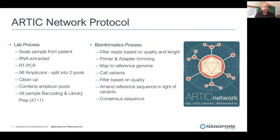The ARCTIC Network Protocol has been developed as an amplicon tiling approach to get a good consensus sequence from SARS-CoV-2 samples that could be degraded, since RNA is subject to degradation. This protocol is 98 amplicons split into two pools, which are then cleaned up, combined, and sequenced on our nanopore GridION. We've been doing around 48 samples per flow cell — 47 positive samples plus one negative.